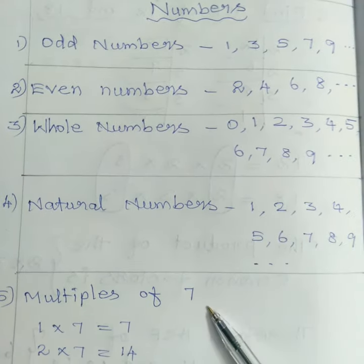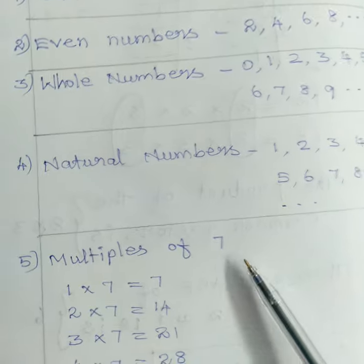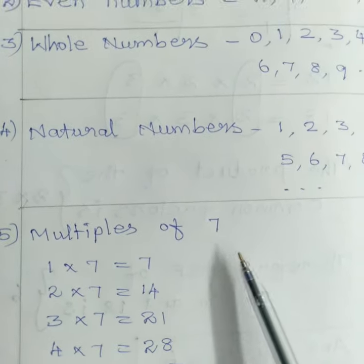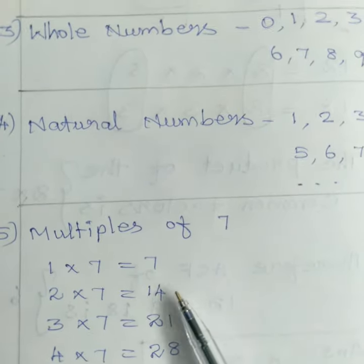Then multiples of 7. Multiples of 7 is the 7th table. Okay, multiples of 7. The answer of multiples of 7 is the answer of 7th table.